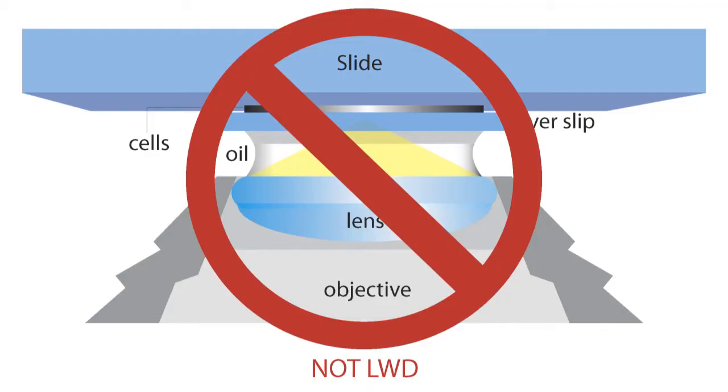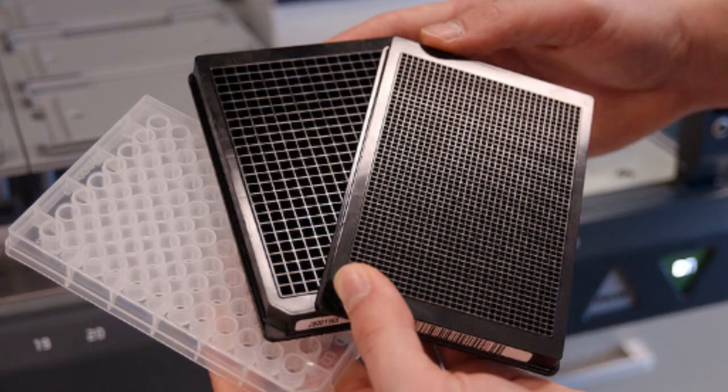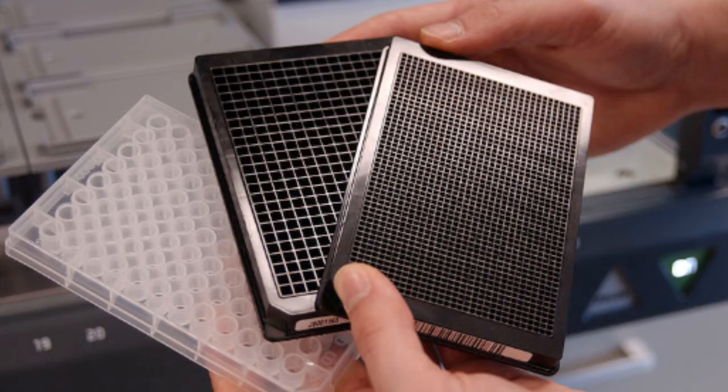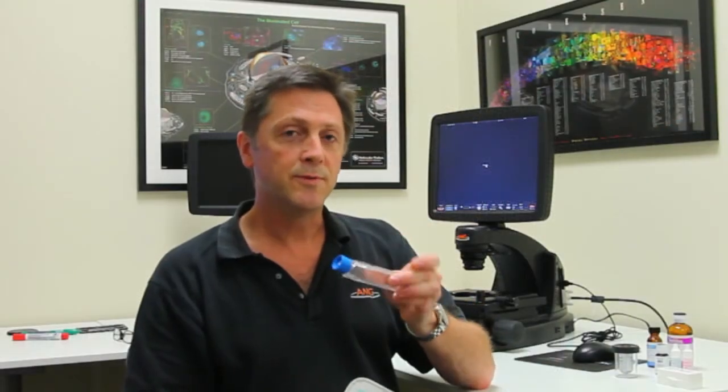This objective doesn't have a long working distance and typically can't focus through this thick piece of glass to see something beyond it, as you would need for something like a microtiter plate, a T-flask, or other kind of live cell vessel.